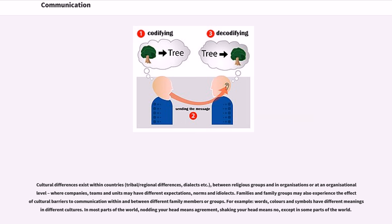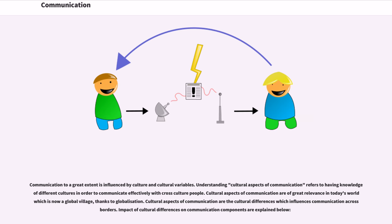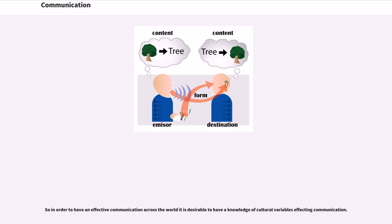Communication to a great extent is influenced by culture and cultural variables. Understanding cultural aspects of communication refers to having knowledge of different cultures in order to communicate effectively with cross-culture people. Cultural aspects of communication are of great relevance in today's world, which is now a global village thanks to globalization. Cultural aspects of communication are the cultural differences which influence communication across borders. The impact of cultural differences on communication components are explained below. So in order to have effective communication across the world, it is desirable to have knowledge of cultural variables affecting communication.